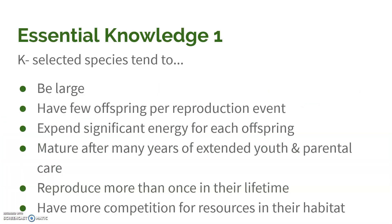K-selected species are the larger ones. They have very few offspring because they don't reproduce a lot. When they do, they take care of their offspring. They expend a lot of energy into making the offspring, so they tend to have large offspring. They are more likely to provide care for that offspring as it grows up, and they don't reach sexual maturity until after many years of youth and parental care.